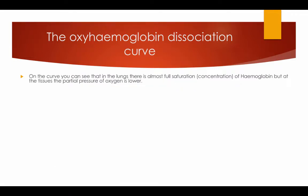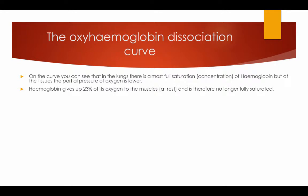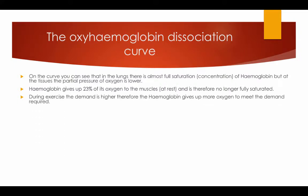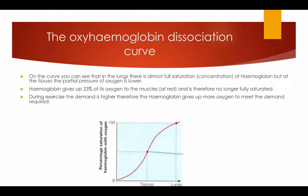On the curve you can see that in the lungs there is almost full saturation of haemoglobin, but at the tissues the partial pressure of oxygen is lower. Haemoglobin gives up 23% of its oxygen to the muscles and is therefore no longer fully saturated. During exercise the demand is higher, therefore the haemoglobin gives up more oxygen to meet the demand required.